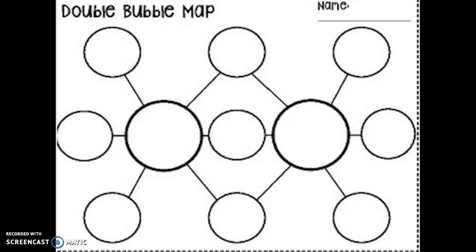Okay boys and girls, today you're going to look at the two plot diagrams that you made, one for Cinderella and one for Prince Cinders, and you're going to make a double bubble map.